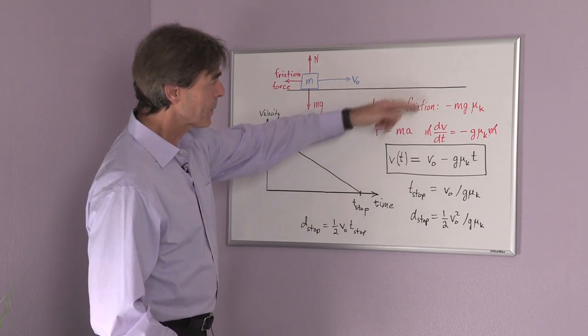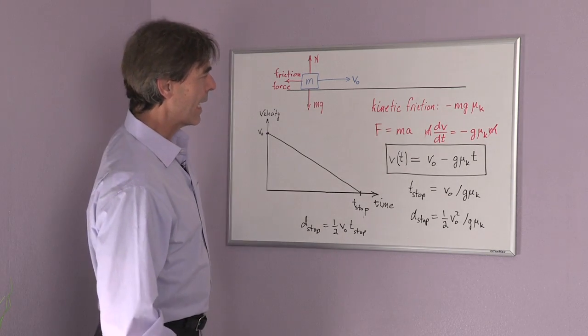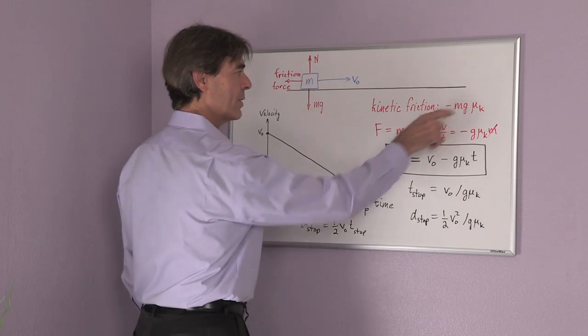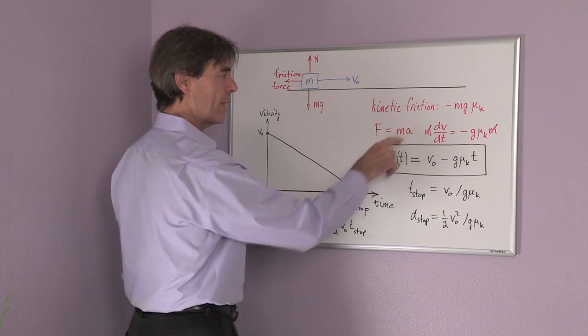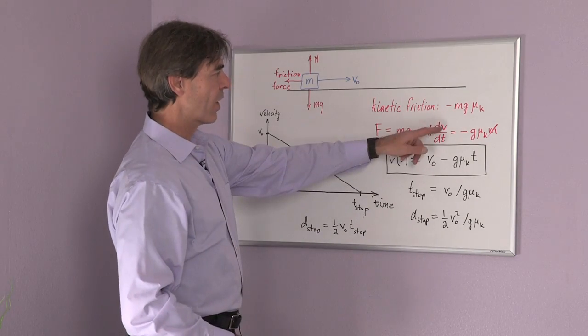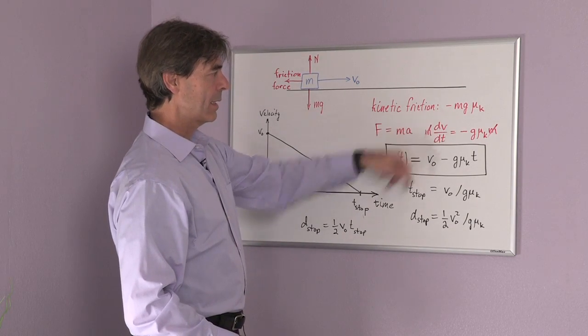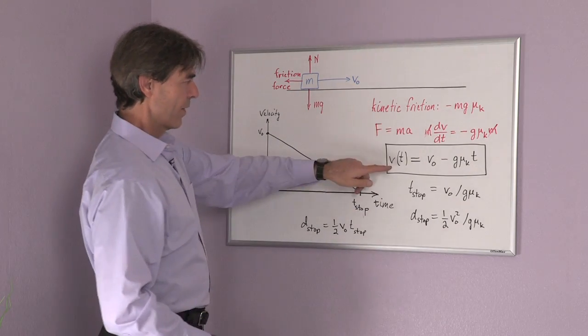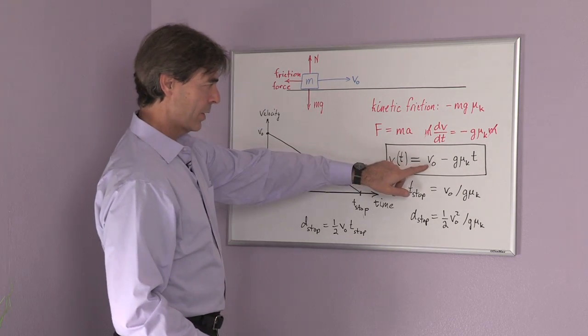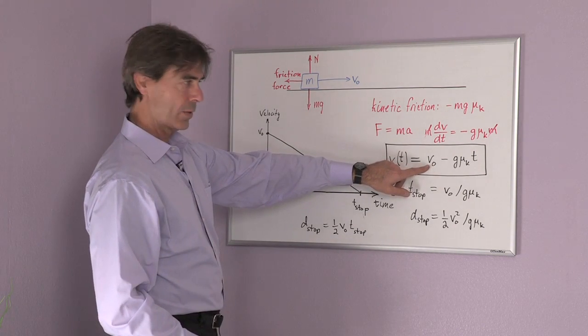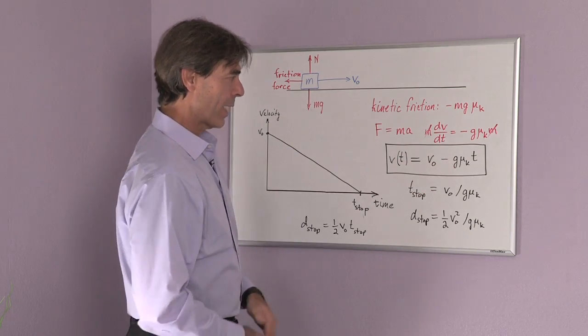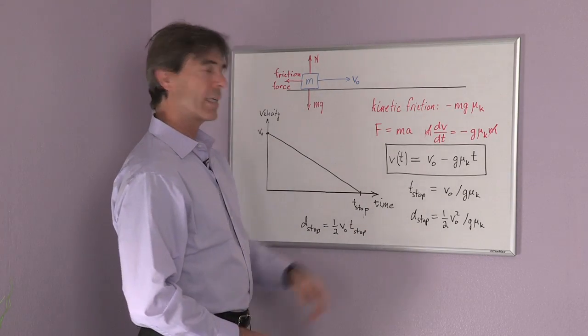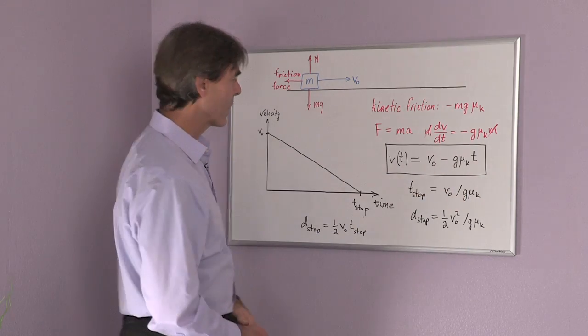The formula for that: we know that F is equal to ma. I set these two expressions equal, and for the acceleration a, I use the change of velocity with time, dv/dt. I come up with this formula, which has the solution: the velocity as a function of time is equal to my initial velocity v0 minus the gravitational acceleration g times the coefficient of kinetic friction times time.